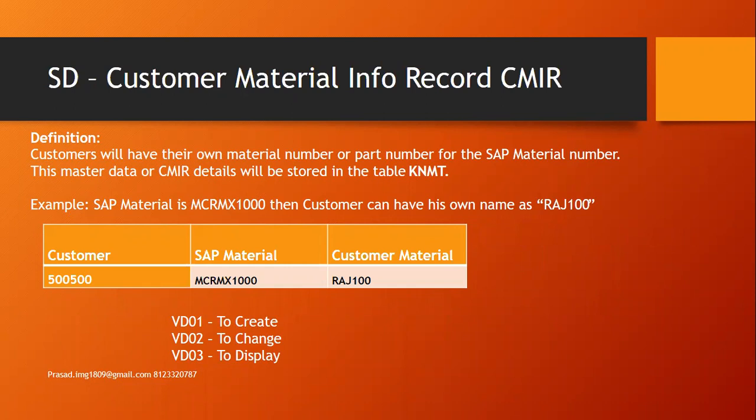What exactly the customer material info record means is: the customer will have his own material number or part number for the SAP material number. We have to maintain the customer's part number in the system in the form of a customer material information record. These details will be stored in the table KNMT.